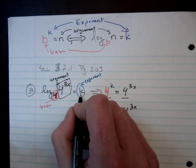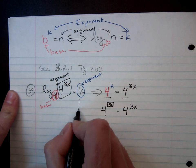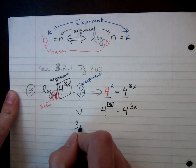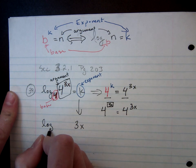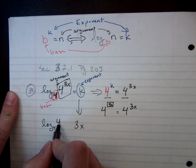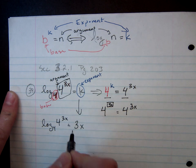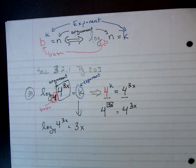So in this case, we know that k is equal to 3x. Therefore, the log base 4 of 4 to the 3x is equal to 3x.